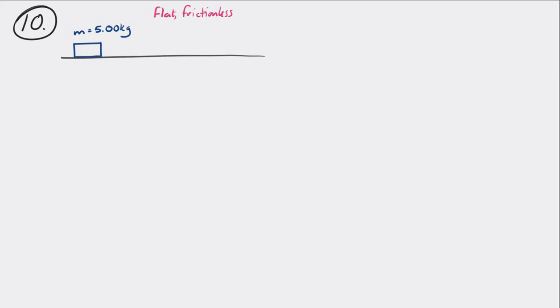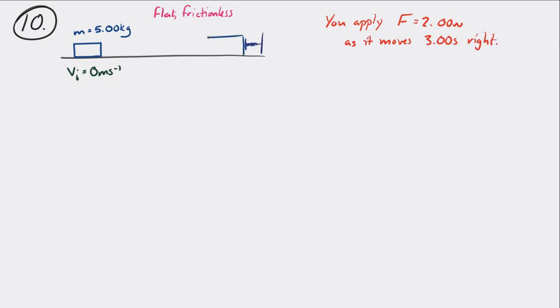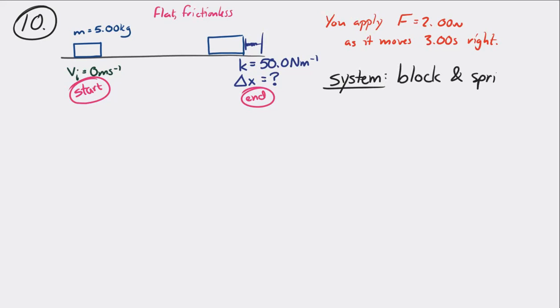A five kilogram chunk of metal sits at rest on a flat, frictionless surface. You apply a two newton force to the right as it moves three meters to the right. After the force is applied, the chunk of metal hits a spring with a spring constant of 50 newtons per meter. Determine the maximum compression of that spring. If we make the system the block and the spring, that's really all we need since we're on a flat frictionless surface — no gravitational potential energy.